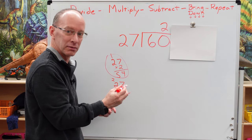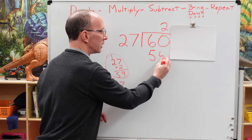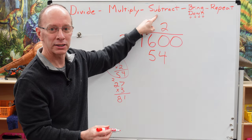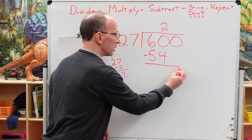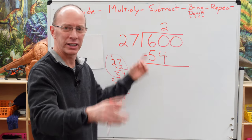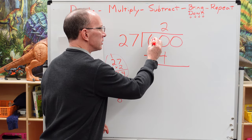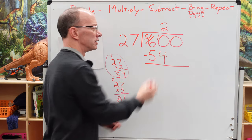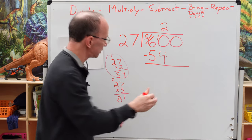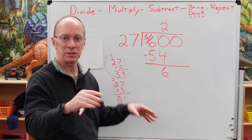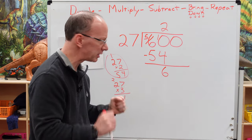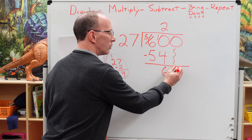So 27 times 2 was 54. I'm going to put the 2 right here. I did a little multiplication, and now I'm going to subtract. I put my subtraction sign here and a line underneath. We've got borrowing and regrouping to do here. I put a line through the 6, that becomes a 5, and this turns into 10. 10 minus 4 is 6. Then 5 minus 5 is 0. Now I bring that next number all the way down.